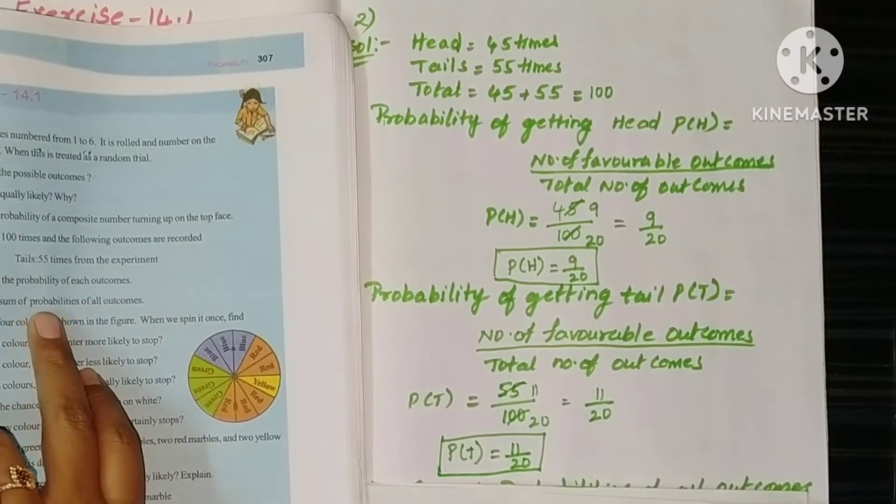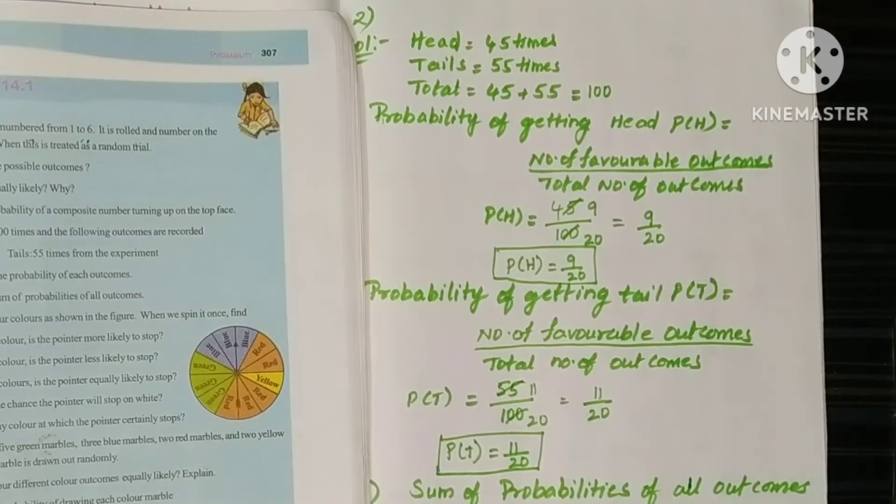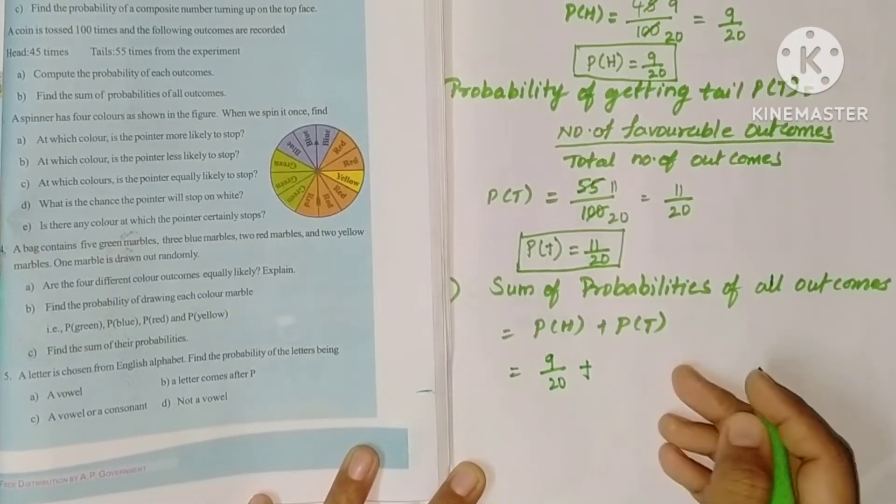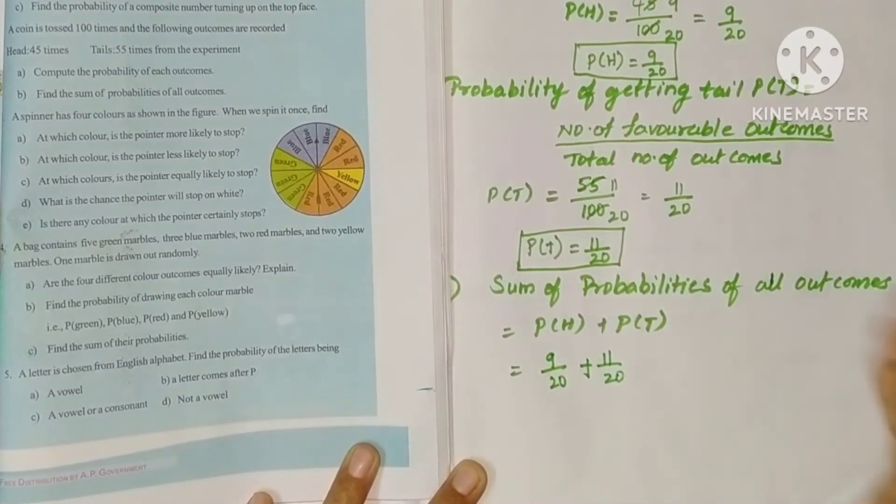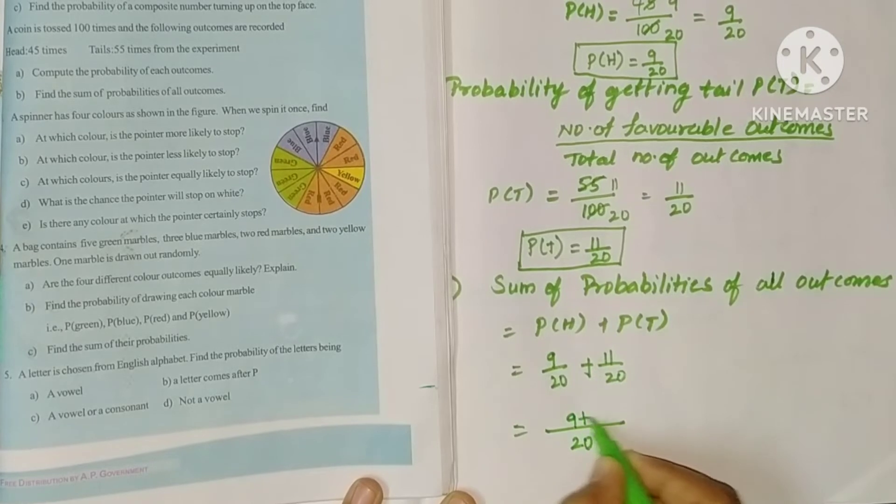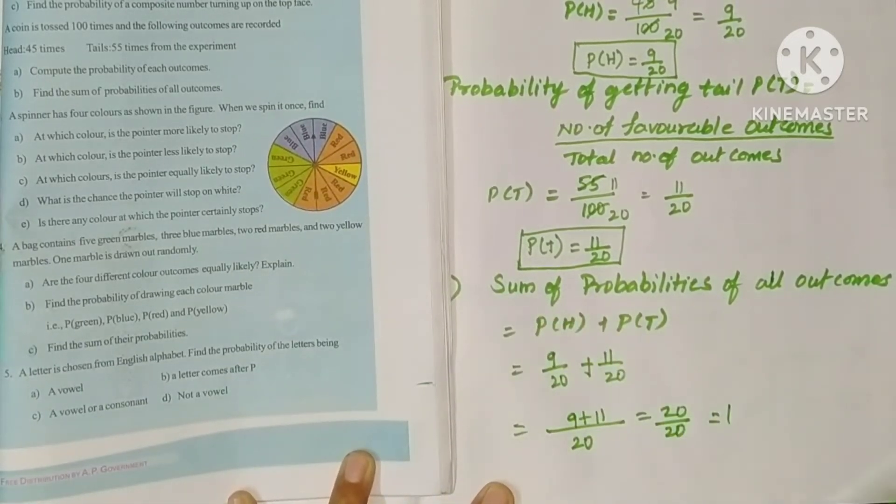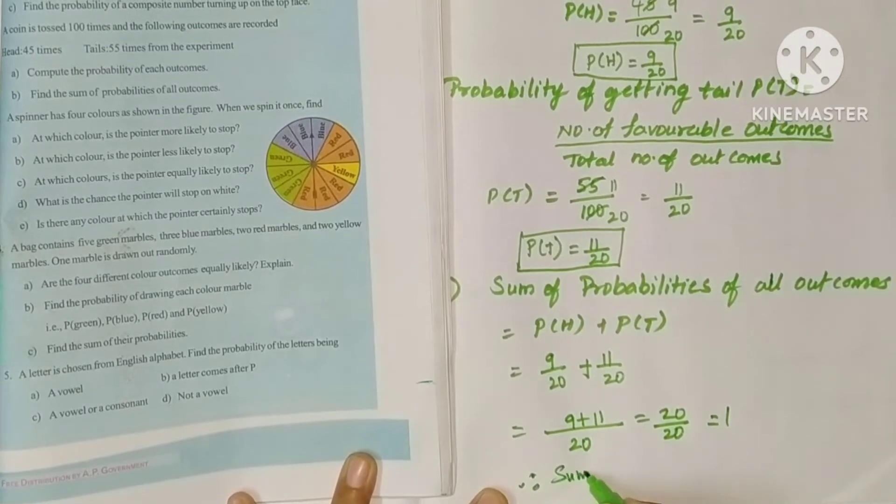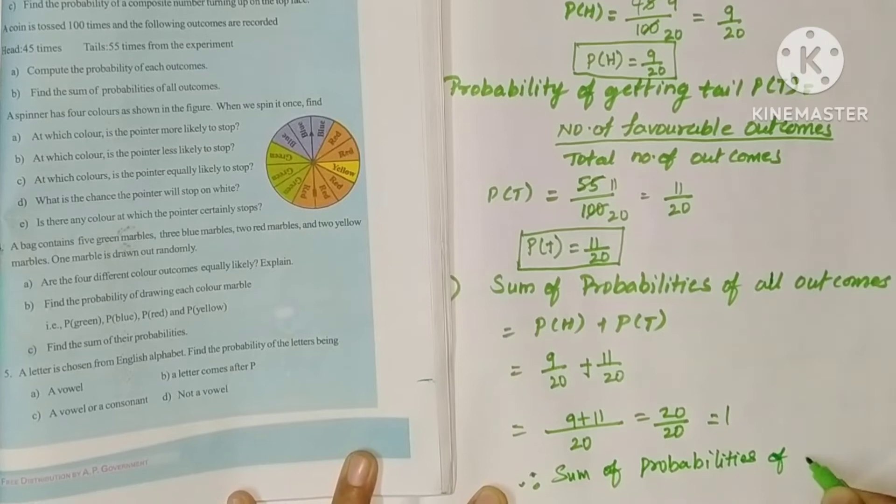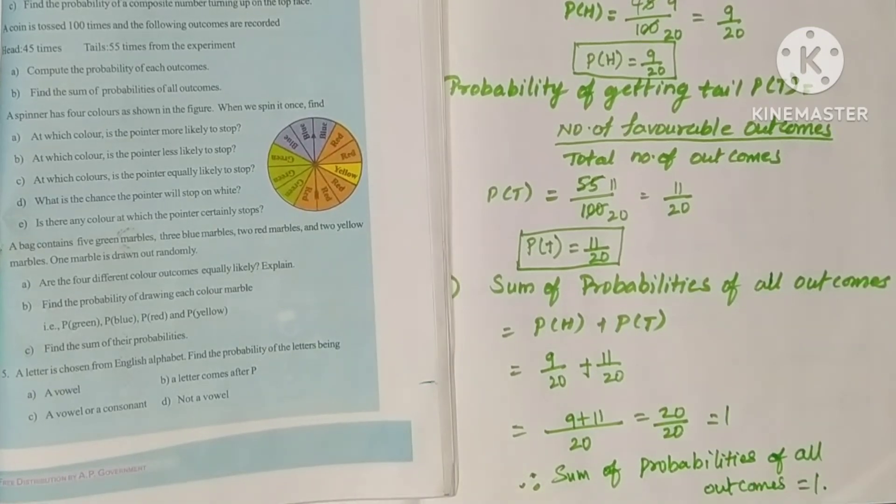Second one: Find the sum of probabilities of all outcomes. So just write sum of probabilities of all outcomes equals P of H plus P of T. How much P of H? 9 by 20 plus P of T, 11 by 20. Students, you can also write 45 by 100, 55 by 100, no problem. So LCM 20: 9 plus 11, 20 by 20 equals 1. So sum of probabilities of all outcomes equals 1. This is our second problem solution.